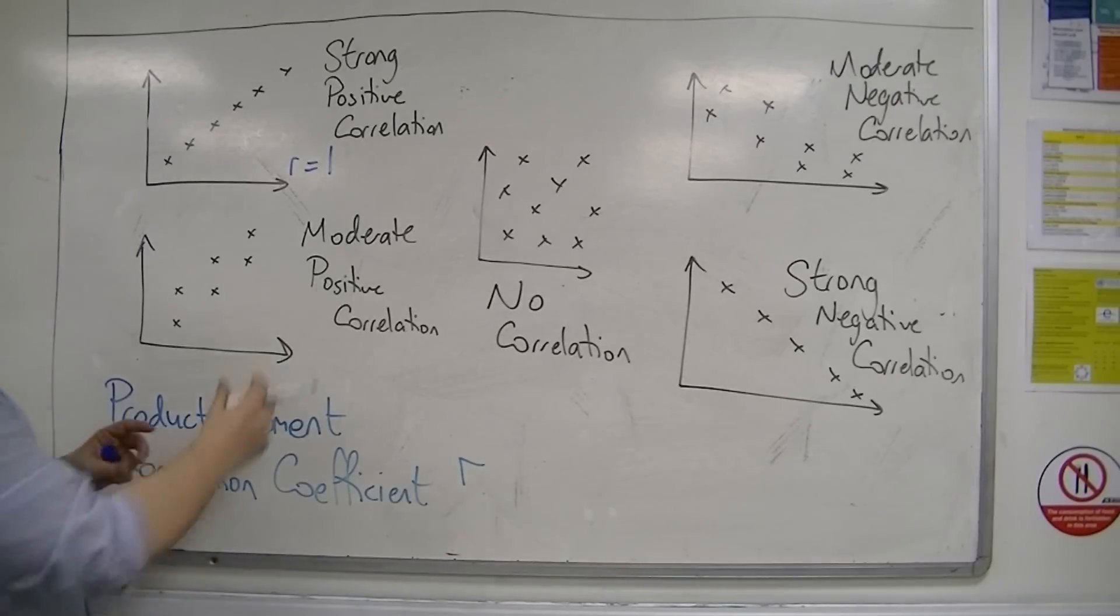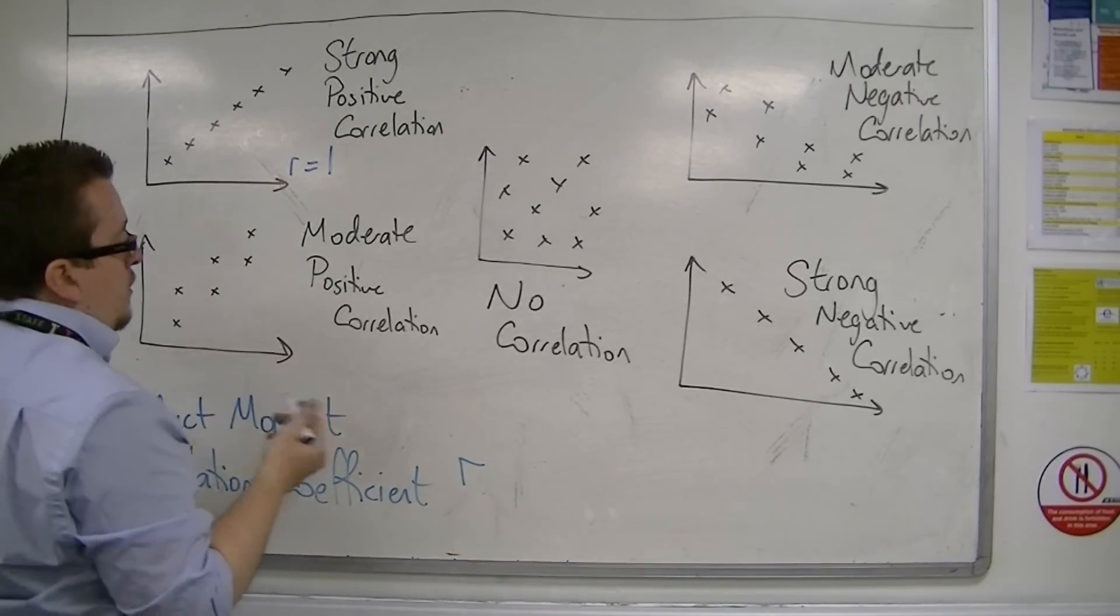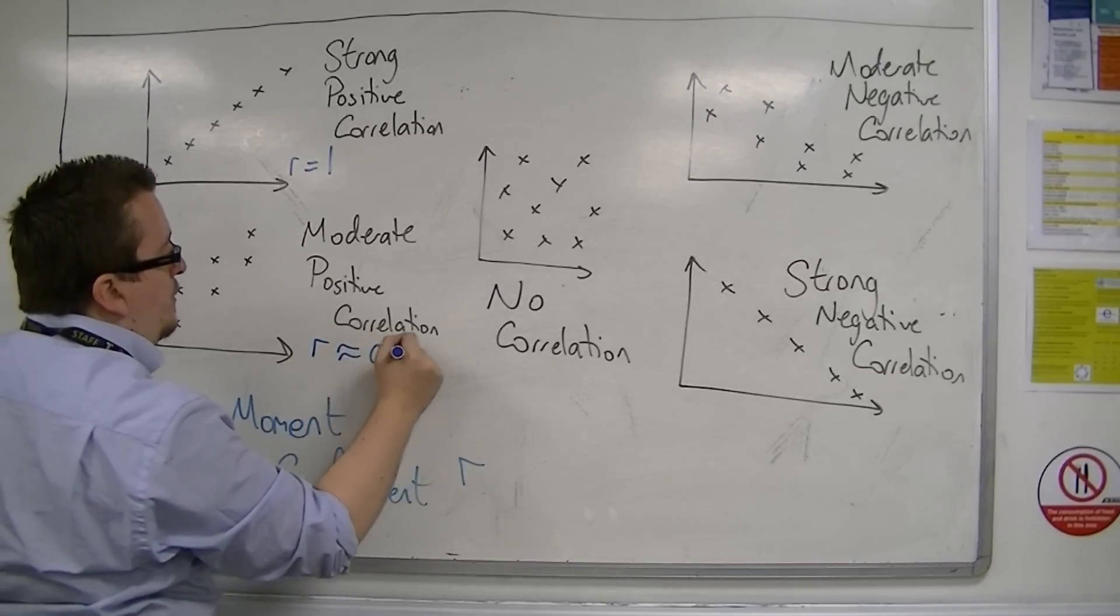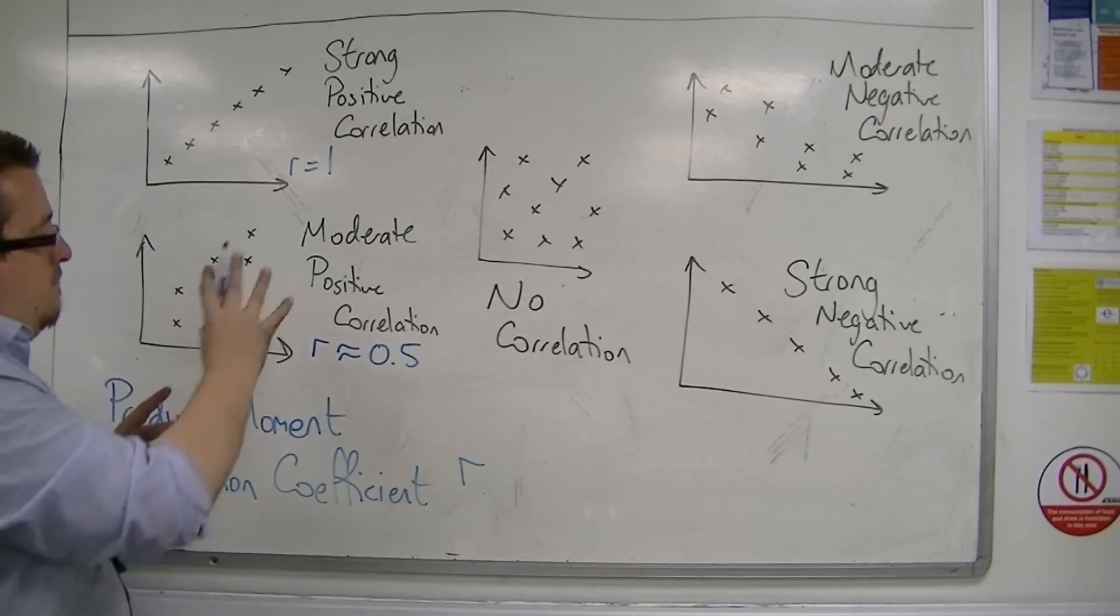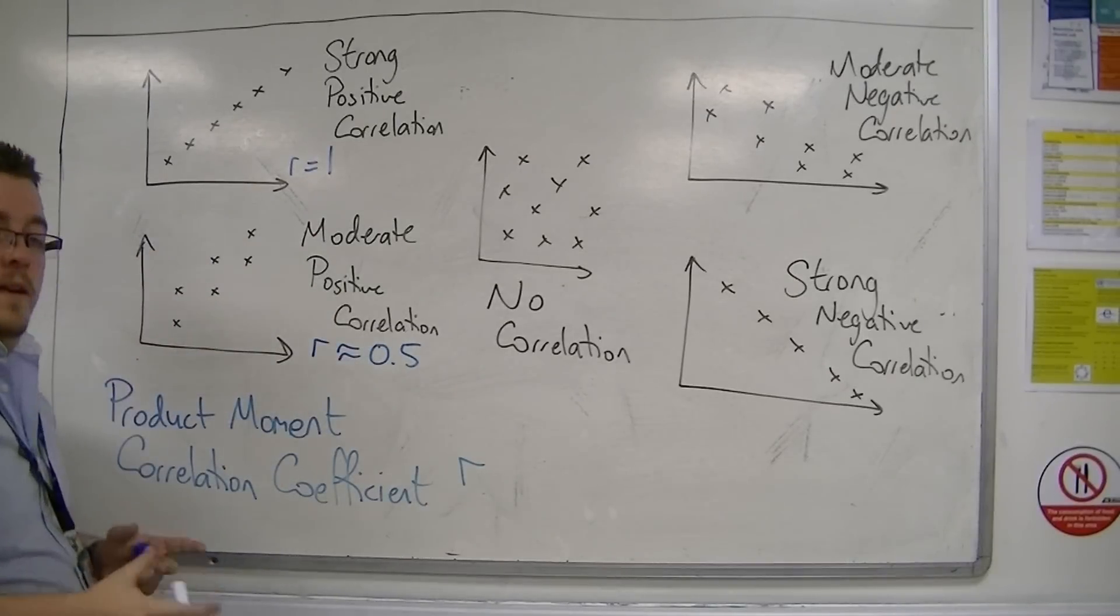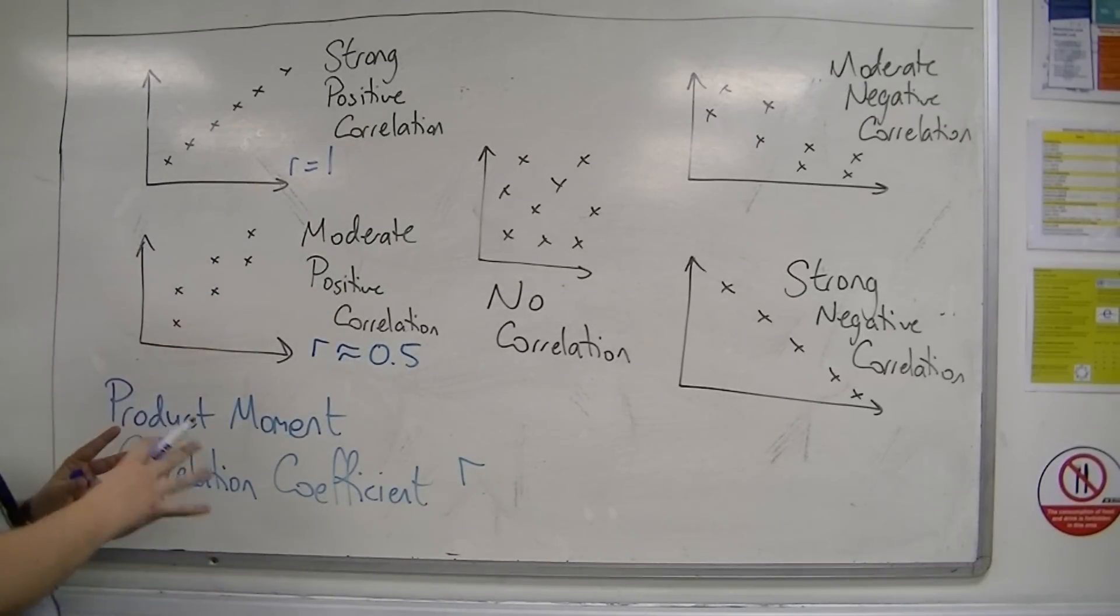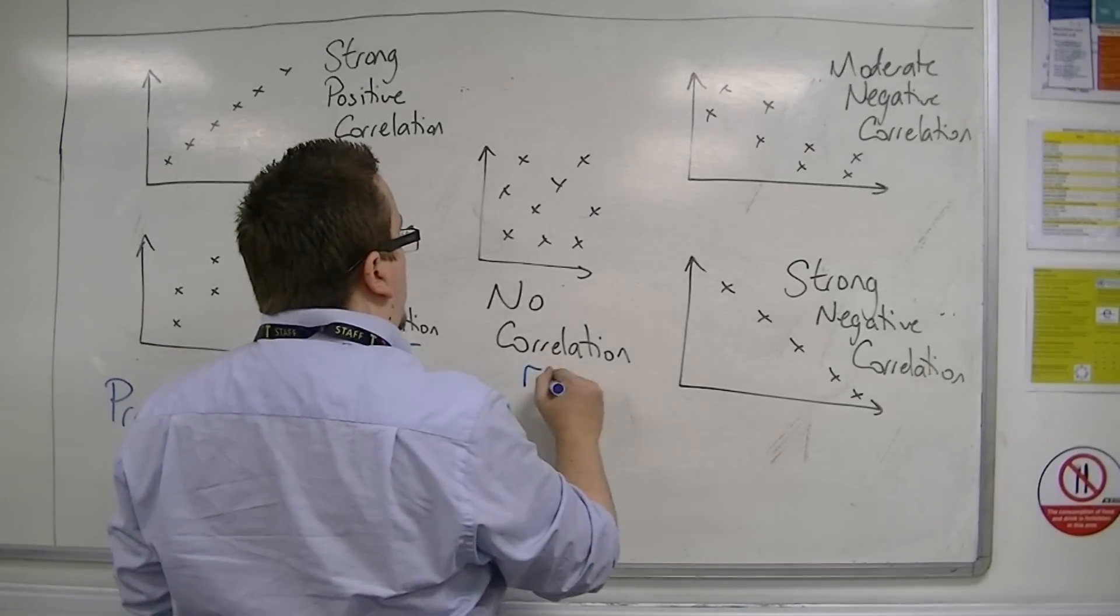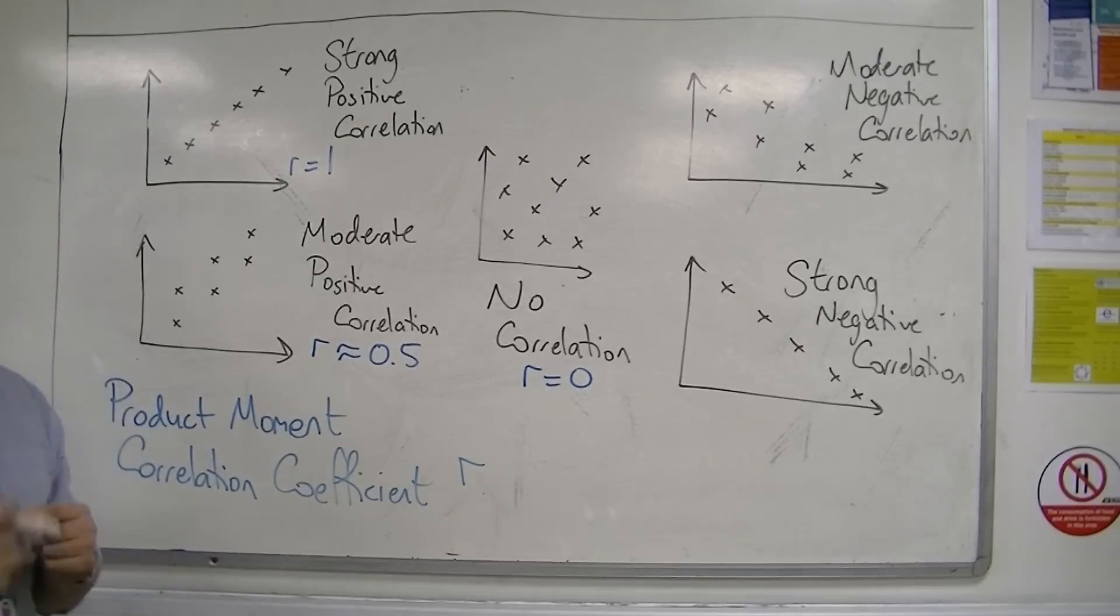When you go down to moderate positive correlation, you're looking roughly about R is approximately 0.5. It's positive, it could be close to 1, but moderate positive correlation is around about 0.5. Then, when you get to R is 0, you're not going to have any correlation whatsoever.